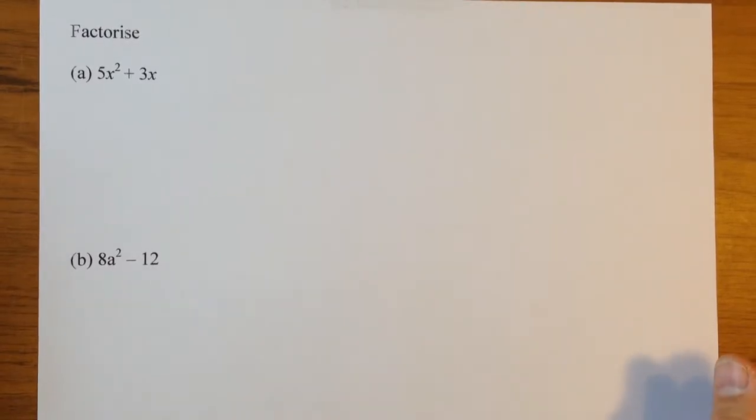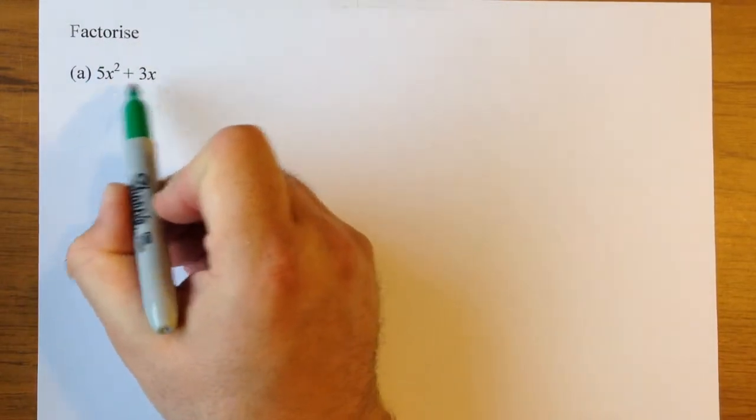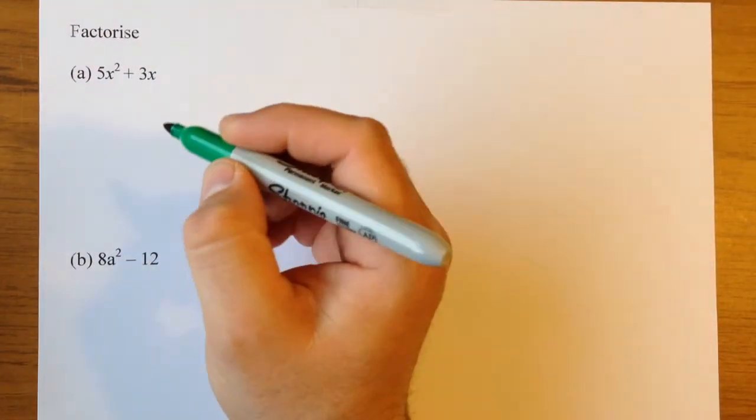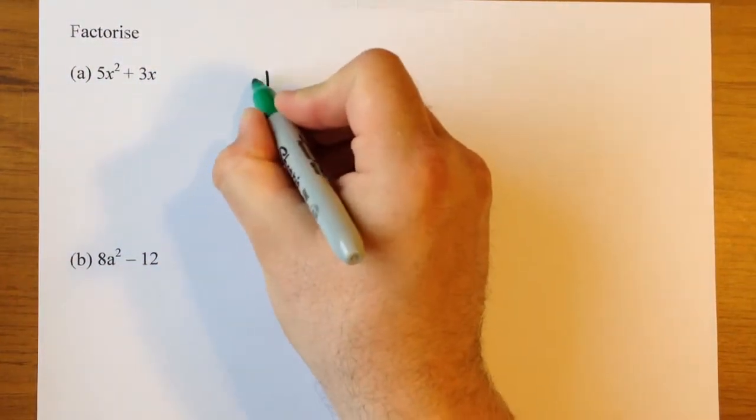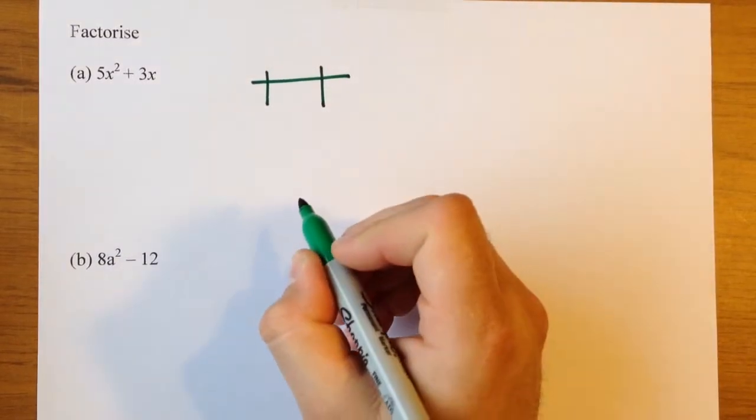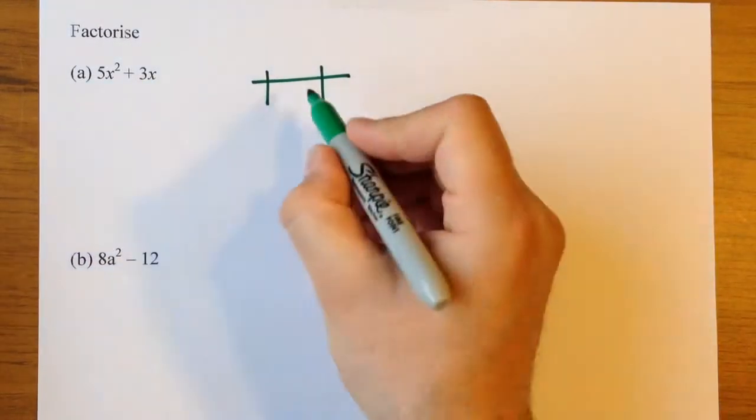I'm going to show you how to factorise these expressions using the grid method. First of all, you'll notice there's only two terms, so we don't need the bigger noughts and crosses grid. We just need the small grid, and we put the expression inside.